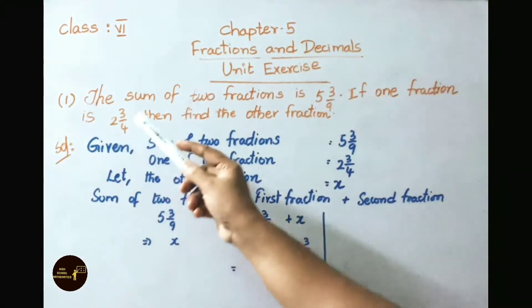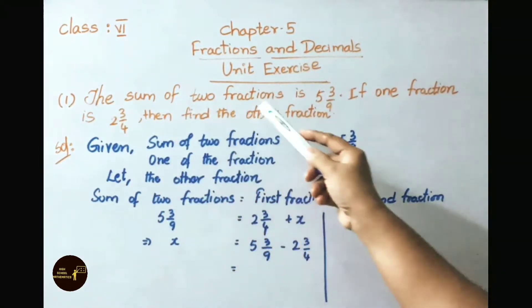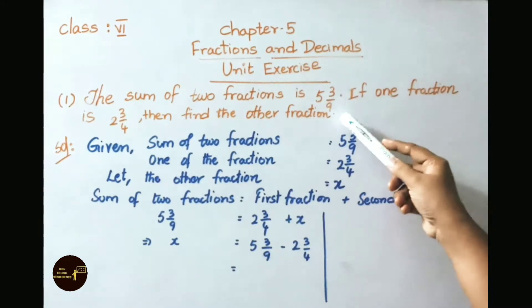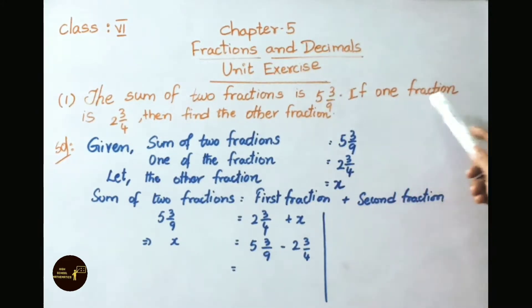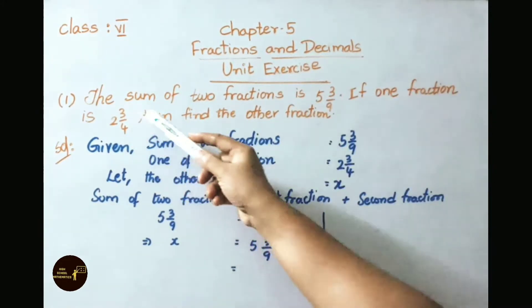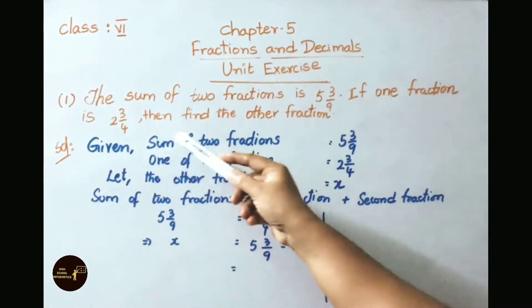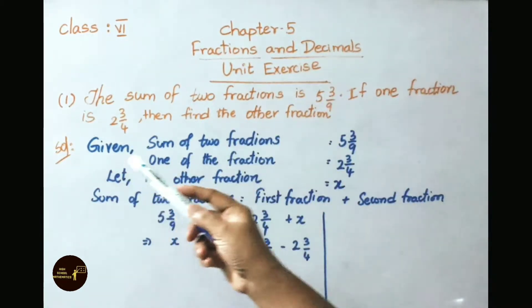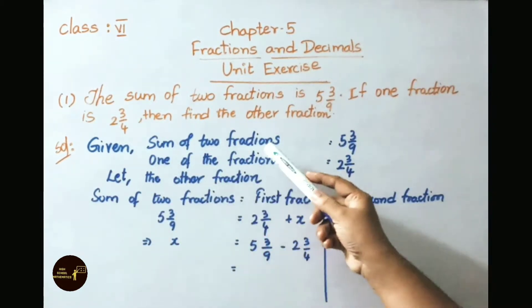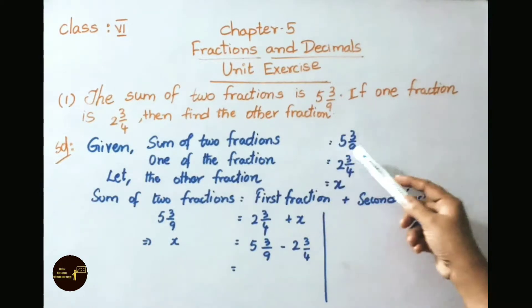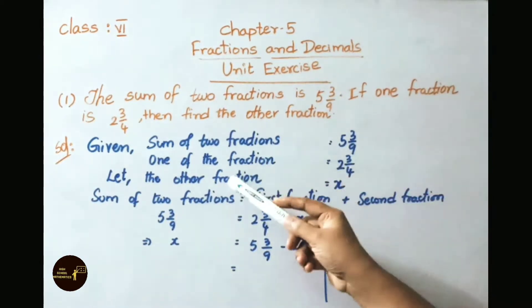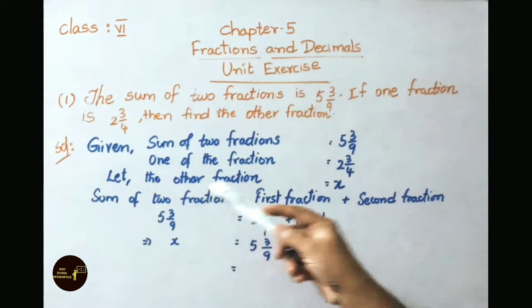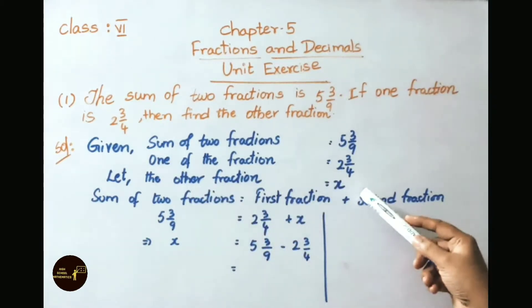See the first question now. The sum of two fractions is 5 and 3 by 9. If one fraction is 2 and 3 by 4, then find the other fraction. Let us see the solution now. Given: sum of two fractions equals 5 and 3 by 9, and one of the fractions is 2 and 3 by 4. Let the other fraction be x.